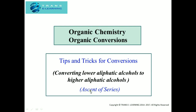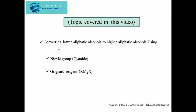In this video we'll be covering two methods: converting lower aliphatic alcohols to higher aliphatic alcohols using the nitrile group, that is the cyanide group, and the Grignard reagent, that is RMgX, where R represents an alkyl group, Mg is magnesium, and X represents a halogen.